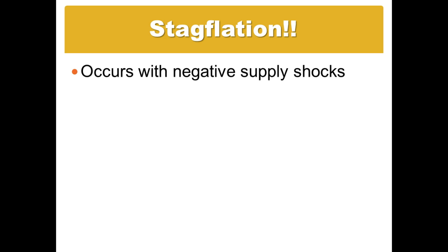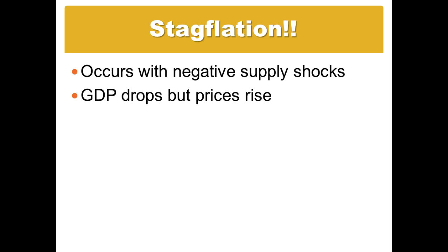This situation — a negative supply shock — has a special name: stagflation. It's a particularly nasty position for an economy to be in. With stagflation, GDP drops but price levels are rising, so the country is stagnant but experiencing inflation — which is where we get the name stagflation. People are squeezed in both directions: they're losing jobs due to cyclical unemployment in a recession, but everything is also more expensive.